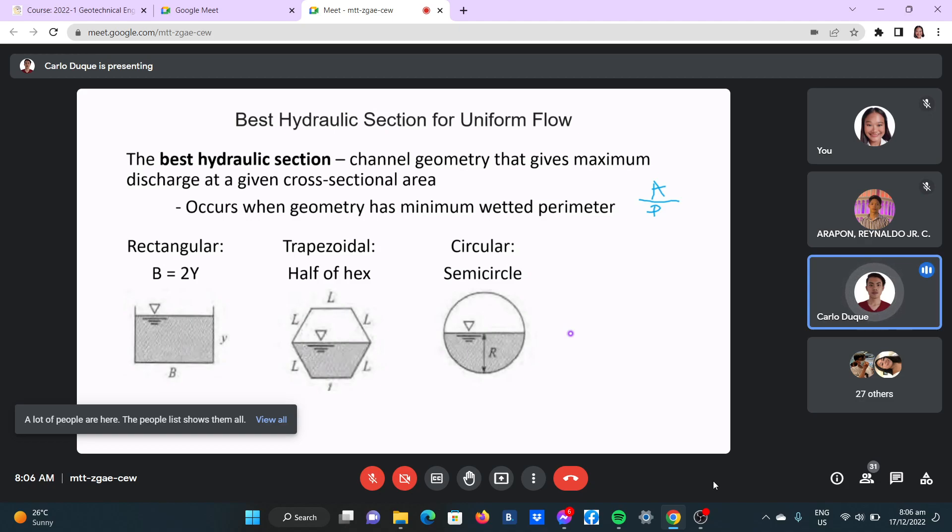Next is circular or semicircle. As you can see, half of the circle, semicircle is the required shape to get maximum wetted perimeter. And then lastly, triangular. For triangular ditches, usually it should be 90 degrees to have the best. Wider than that or narrower, it's no longer the best triangular shape. So these are the best shapes for hydraulic section.